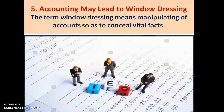The fifth point is accounting may lead to window dressing. Window dressing in accountancy means manipulating accounts so as to conceal vital facts — hiding material facts or truth to mislead potential investors. They are not showing the exact figures in the books of account and are misleading the users. Accounting may lead to window dressing, and that is one limitation related to accounting.